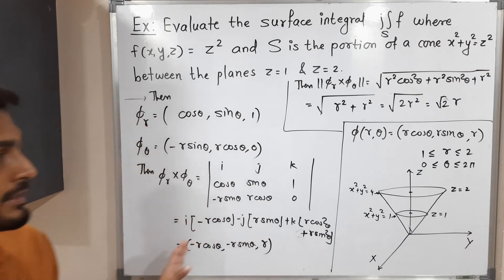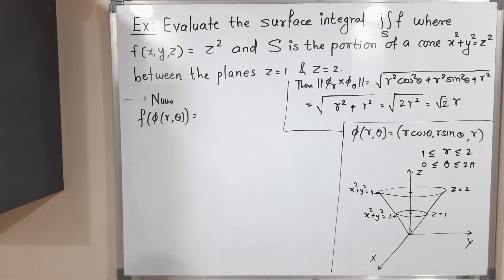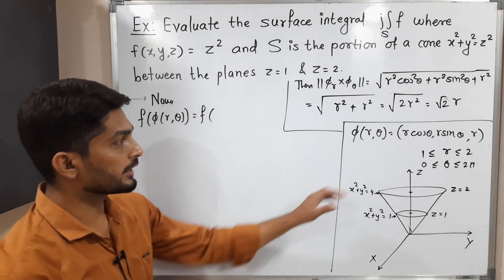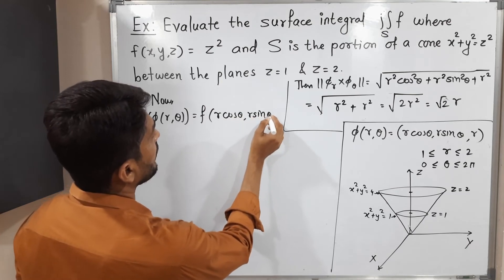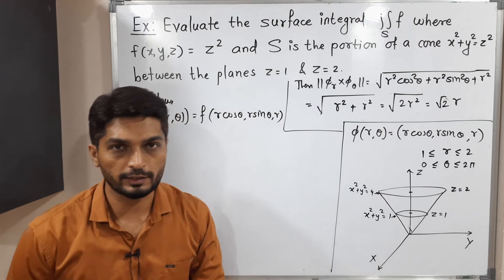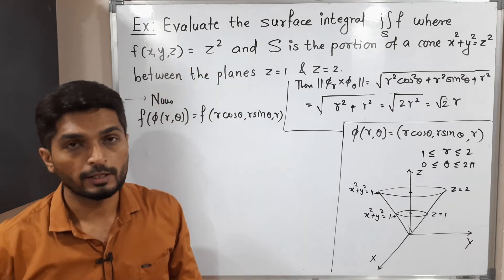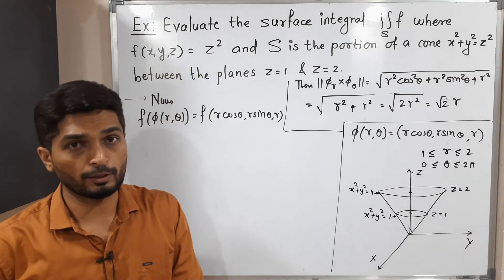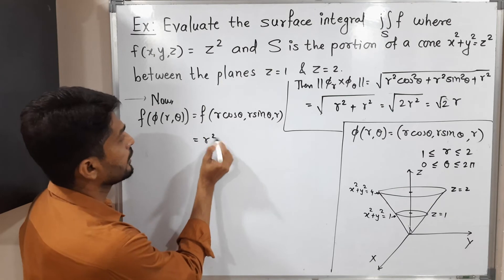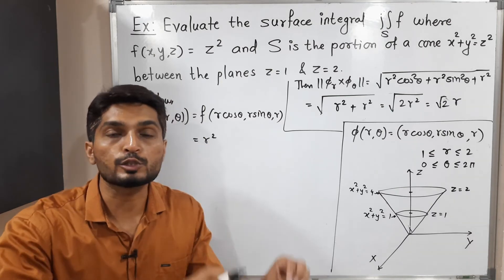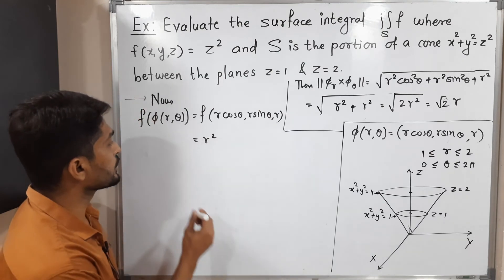Now let us find F of phi(R, theta). We have phi(R, theta) equals (R cos theta, R sin theta, R), so F of phi(R, theta) equals F(R cos theta, R sin theta, R). The definition of F is F(x, y, z) equals z squared, so we take the square of the third component. The third component is R, so F of phi(R, theta) equals R squared. Now everything is ready. We put all these values into the definition of the surface integral of the scalar field and solve the double integration to get the answer.